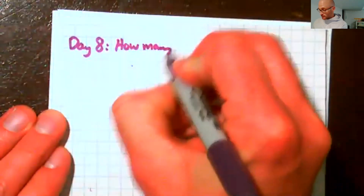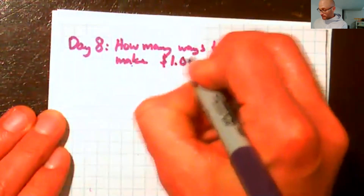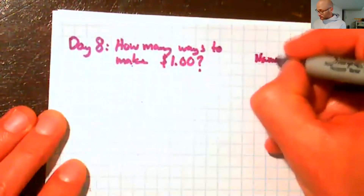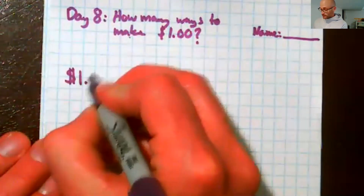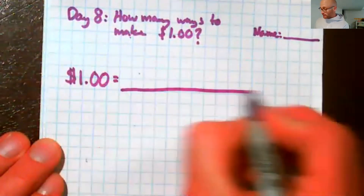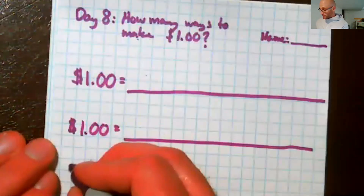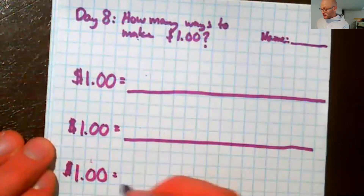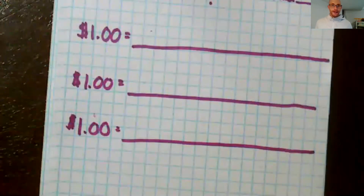The activity page for day eight is going to be pretty simple. The first thing we want is a label in the top left hand corner that says day eight, how many ways to make a blank — one dollar — and a spot for our name. Then all we need to do for our day eight activity page is write: one dollar equals and then a long blank. You're going to want to do many, many of these on your page — hopefully several pages — because this is where we're going to write a decimal expression that has a lot of decimal coin values added up that equal one dollar.